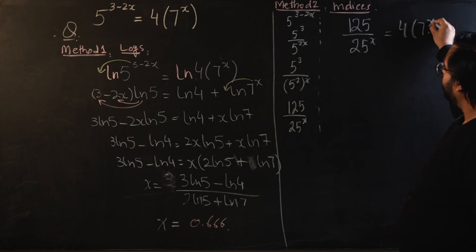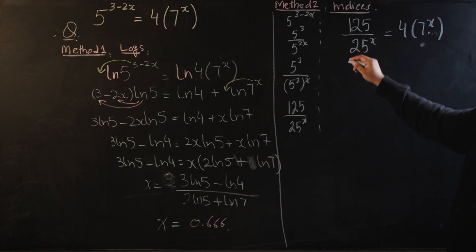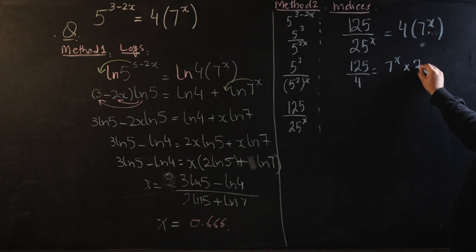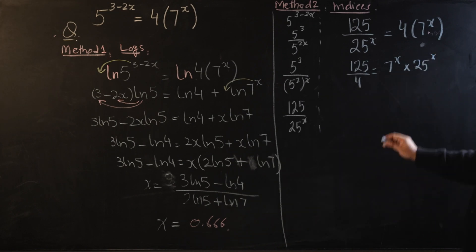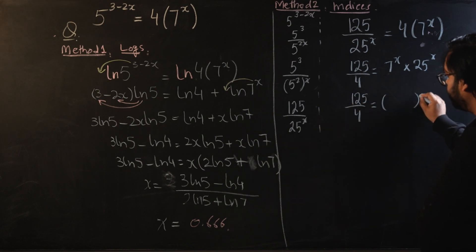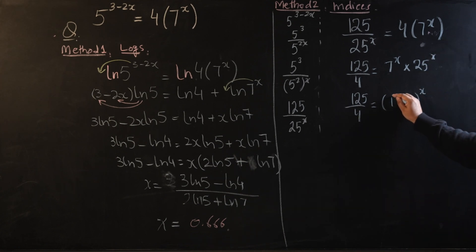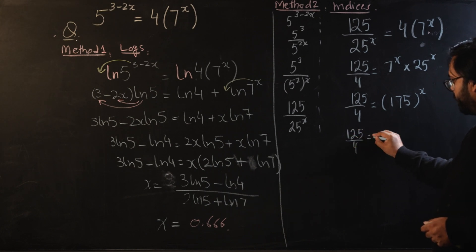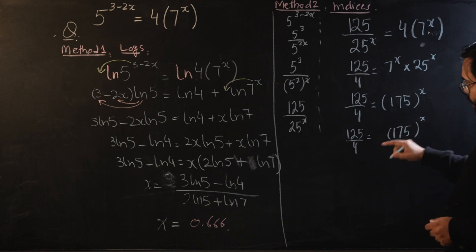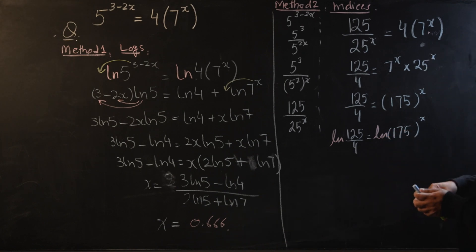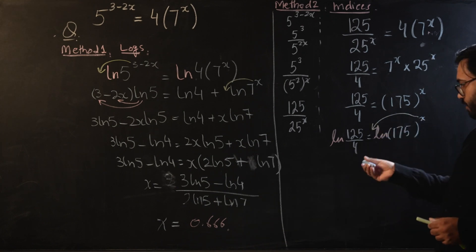So my left-hand side is now 125 over 25 raised to the power x, and the right-hand side is four times seven raised to the power x. Bringing all x terms to one side gives 125 over 4 equals seven to the power x times 25 to the power x. Multiplying those gives 175 to the power x. Now we introduce logarithms on both sides and use the power rule to bring x forward.